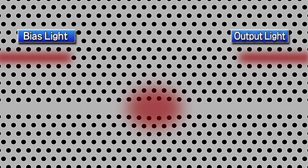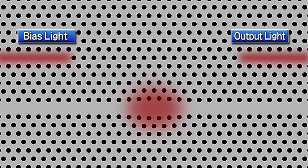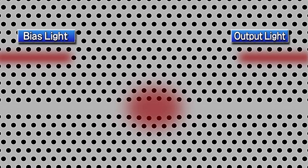Once an optical pulse is added, the bias light can enter the resonator and is output from the opposite waveguide. This is because the refractive index of the resonator is changed by the optical pulse, due to the optical nonlinearity of the material.